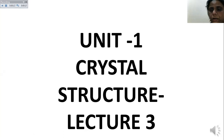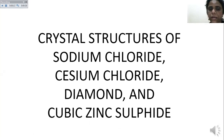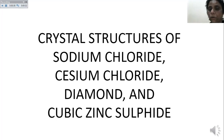We are going to continue with the third part of the crystal structure, lecture number three related to crystal structures. Crystal structure means how the crystalline solid is defined - how its atoms, ions, cations are arranged and organized. We will study three main structures: sodium chloride (NaCl), cesium chloride (CsCl), diamond, and cubic zinc sulfide.